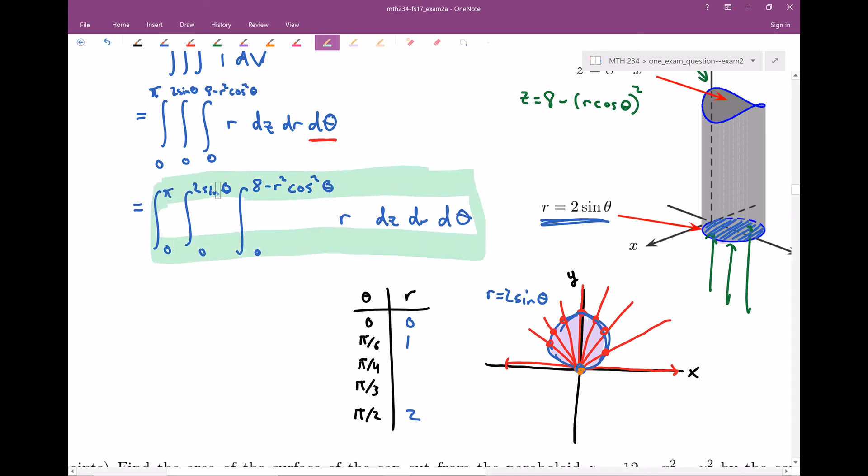And that right there is our final answer. Again, our goal was to set up, not to necessarily evaluate. And that's good because evaluating out cosine squared takes a step or two because we have to use the power reduction formula, all that sort of stuff. So I'm happy that we just had to set this one up. All right, there you go. Hope you enjoyed. I'll see you guys next time.